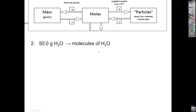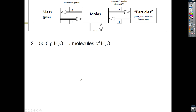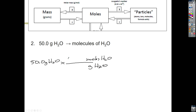Here I'm given 50 grams of water and I want to know how many water molecules that is. Using dimensional analysis, you write your given: 50.0 grams of H₂O. I need to go from grams to moles, so I need moles of water on top and grams of water on the bottom. The conversion between moles and grams is for every one mole, it's the molar mass of H₂O. In this case, you add up two hydrogens and one oxygen, and you get 18.02 grams.